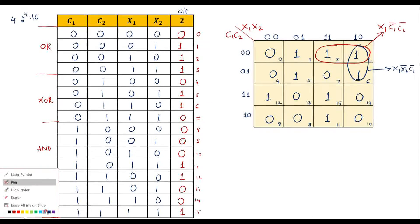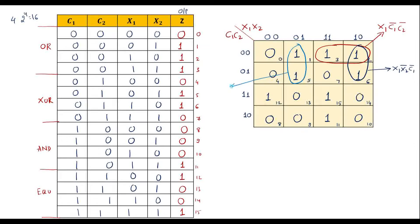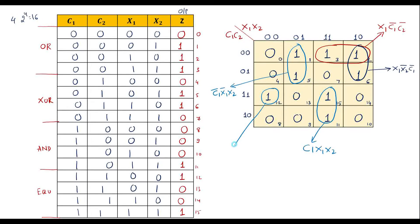For the pair of cells 1 and 5, the value corresponds to X1·X2̄·C1̄. Then we can group cells 11 and 15, where the common row value is C1 and the column gives X1·X2, so the term is C1·X1·X2. Cell 12 forms a pair with another 1; between rows 1 and 2 the common is C1̄, column is X1̄·X2, giving C1̄·X1̄·X2. Finally, cell 12 (C1=1, C2=1, X1=0, X2=0) must be considered independently, giving term C1·C2·X1̄·X2̄.